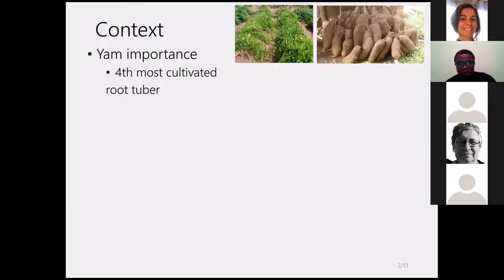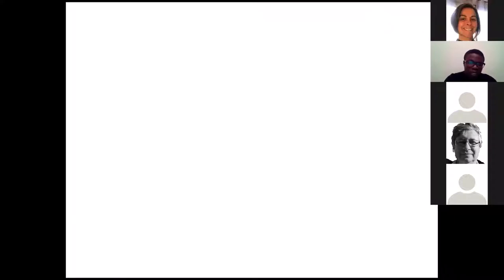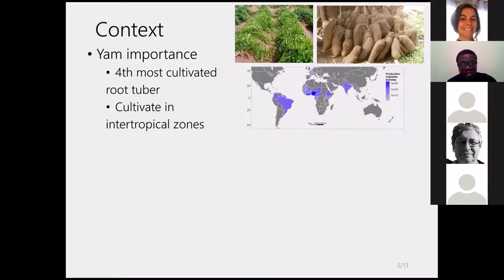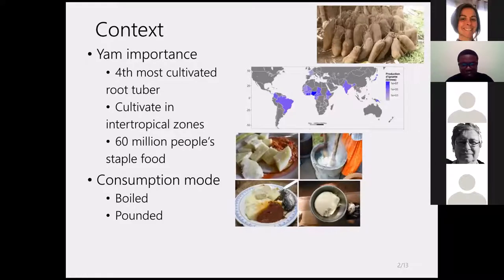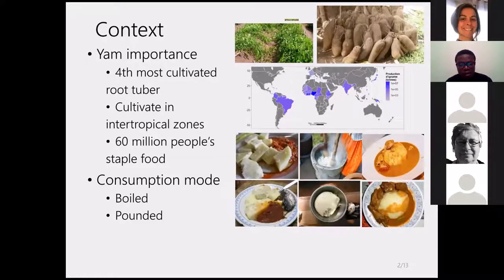Yam is the fourth most cultivated tuber crop after potato, cassava, and sweet potato. It is cultivated in the intertropical zone, particularly in West Africa, and represents a staple food for more than 60 million people. It is mostly consumed boiled or pounded, and may be accompanied by fish and other foods.